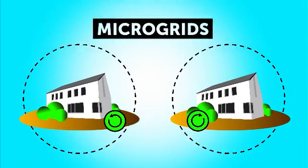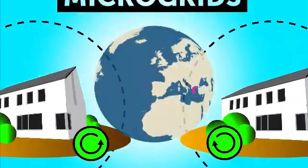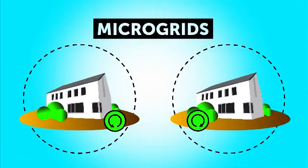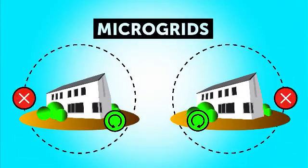The concept of the islanding of local networks when the need arises is called a microgrid. The idea originally comes from Greece, since it has many islands that must be self-supporting in power because there is no connection to the main grid on the continent.